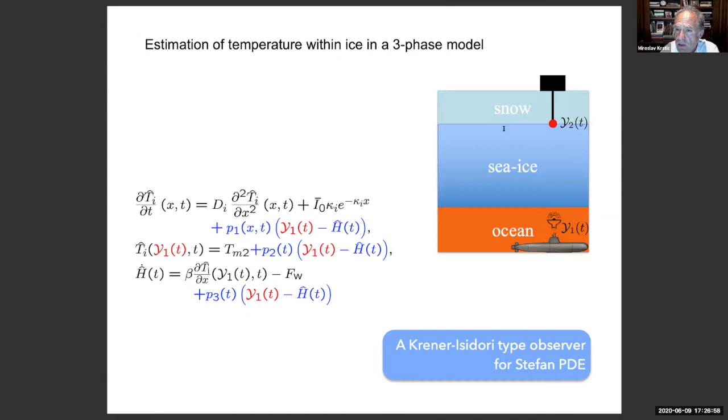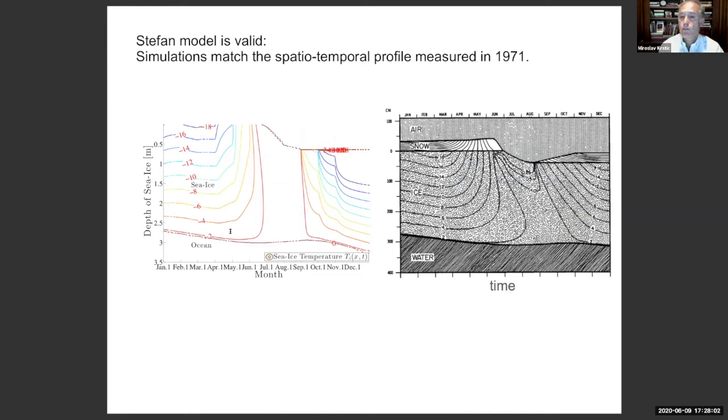There are certain boundary measurements that are feasible, such as the position of the ice-water interface, which is done using sonar measurements, as well as the position of the interface between the snow and the ice. And the observer is given here. For those of you who are familiar with backstepping, you know that it's a completely dual design in which rather than designing the kernels of Volterra type operator for a backstepping transformation and ultimately for boundary control law, what's being designed instead is the gain functions of this Luenberger type observer. Those functions are designed. And let me show you an implementation of this observer.